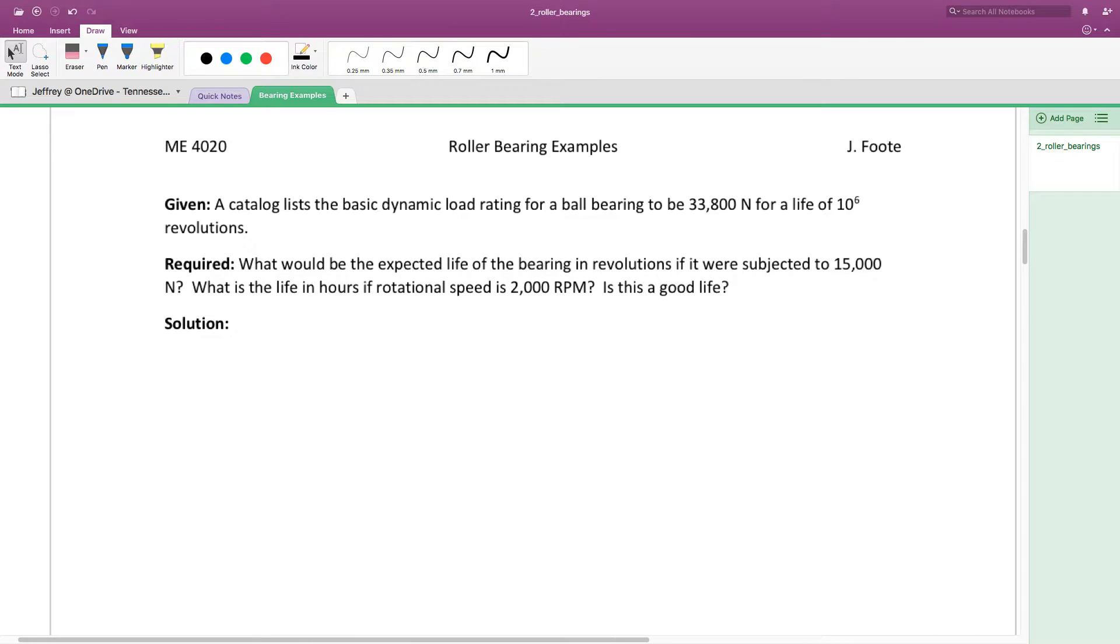Here we have a bearing with a given C10 value, the dynamic load rating for a life of 10 to the 6 revolutions. We know it's a non-Timken bearing. We want to know the expected life if it's subjected to 15,000 Newtons. What is the life in hours if rotational speed is 2000 RPM? And then the question asks, is this a good life?